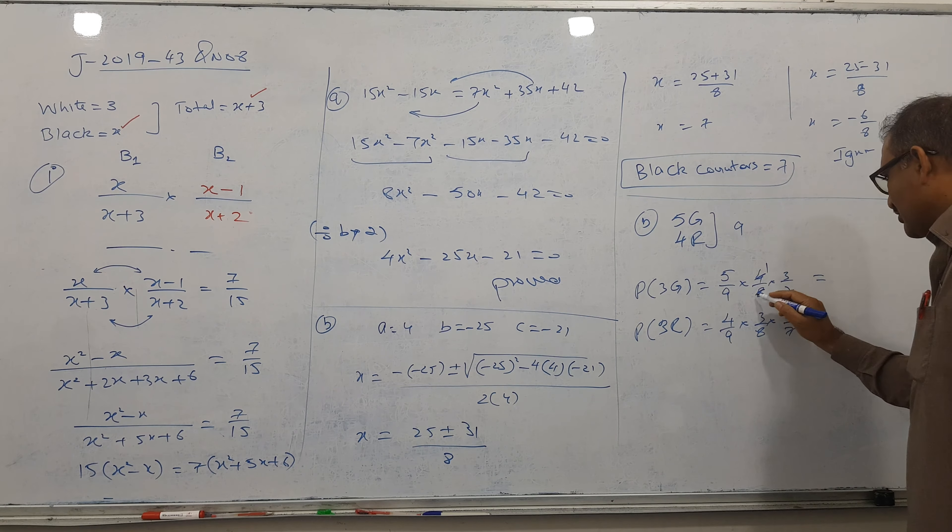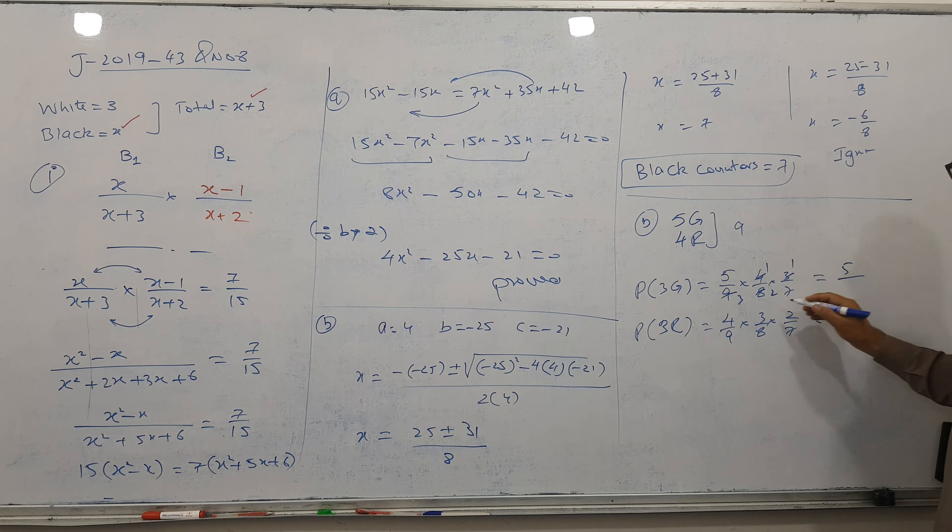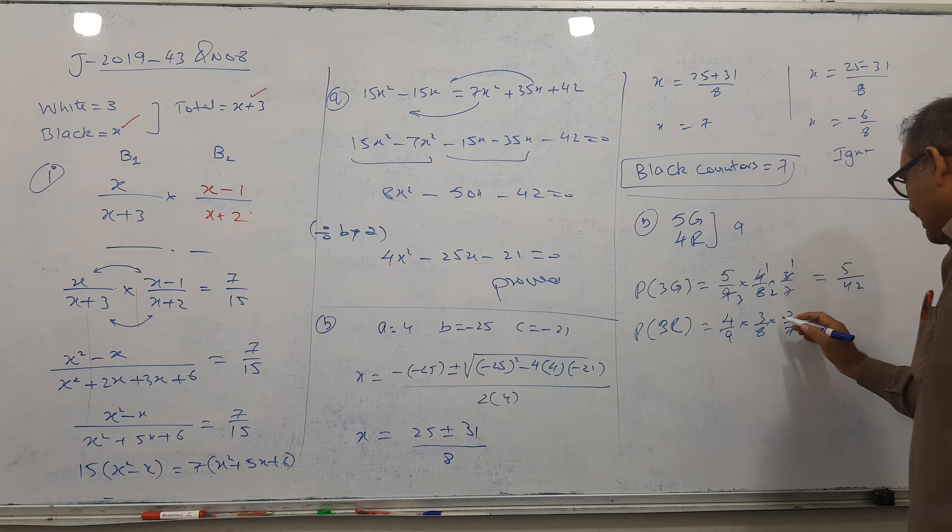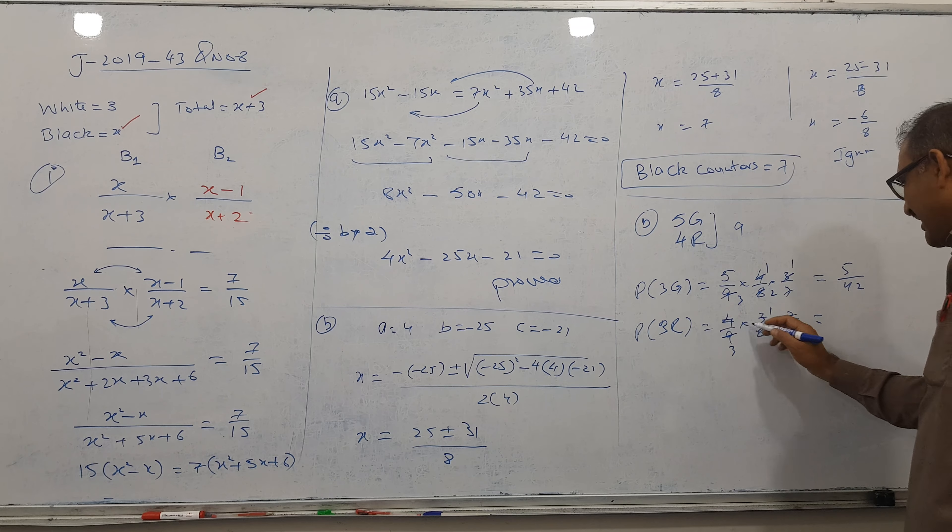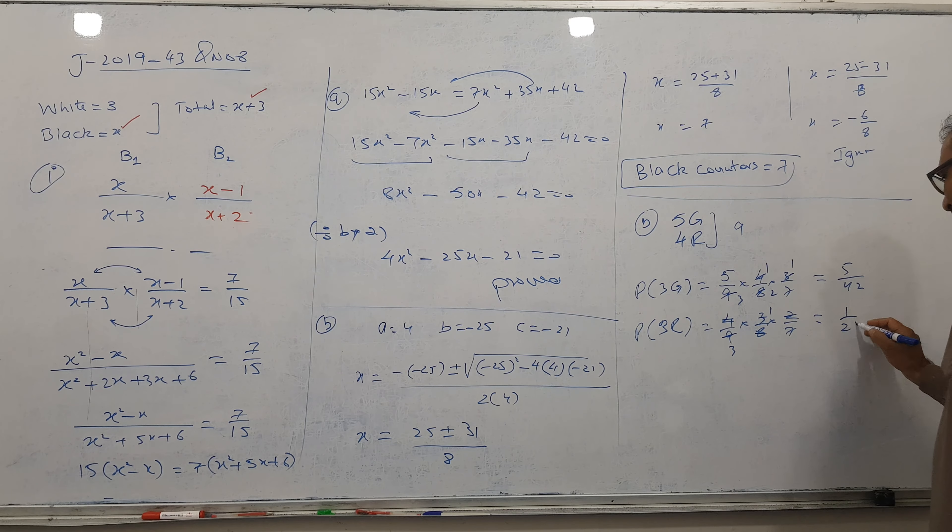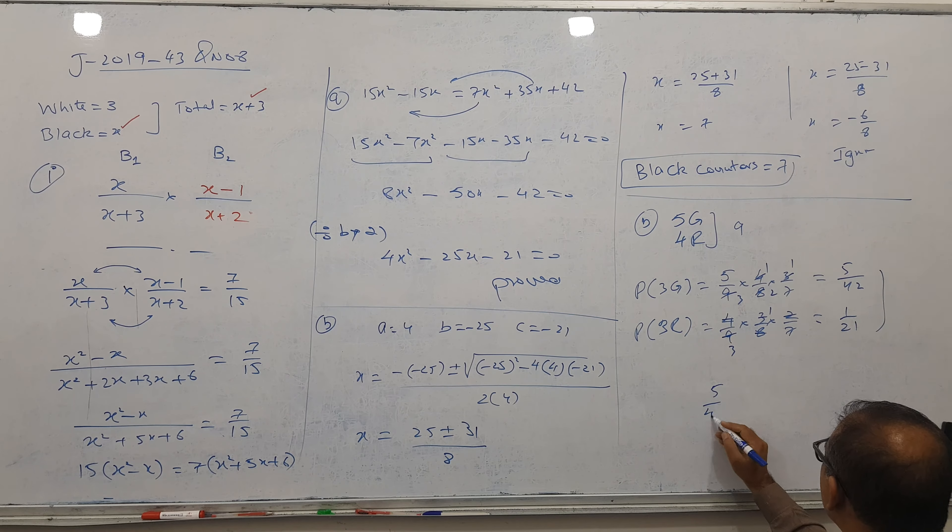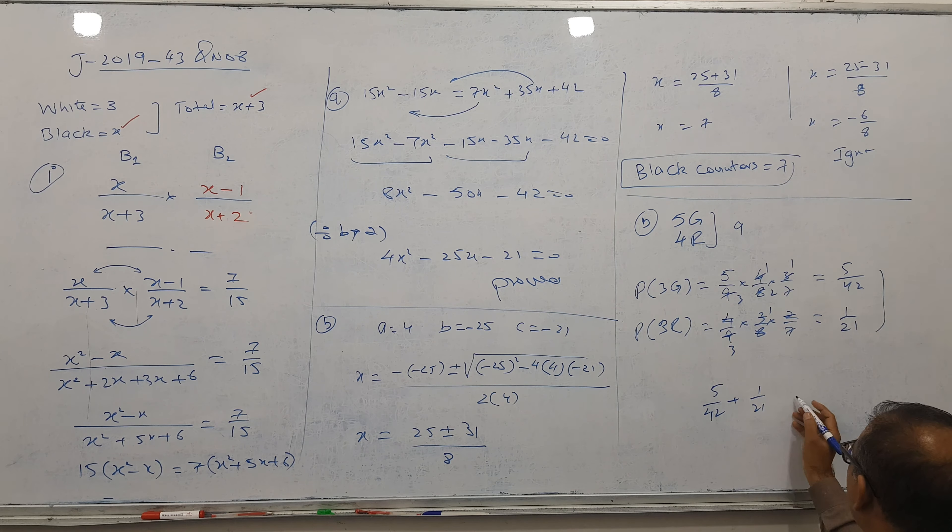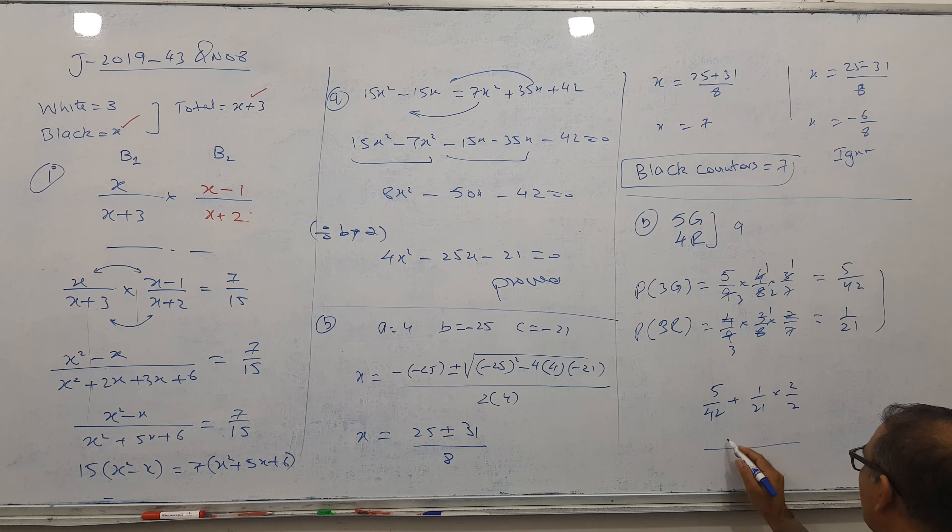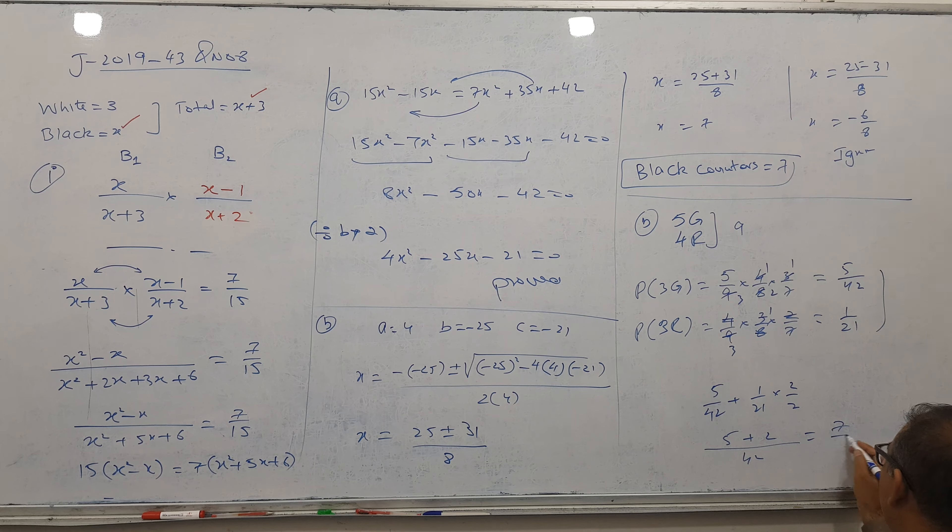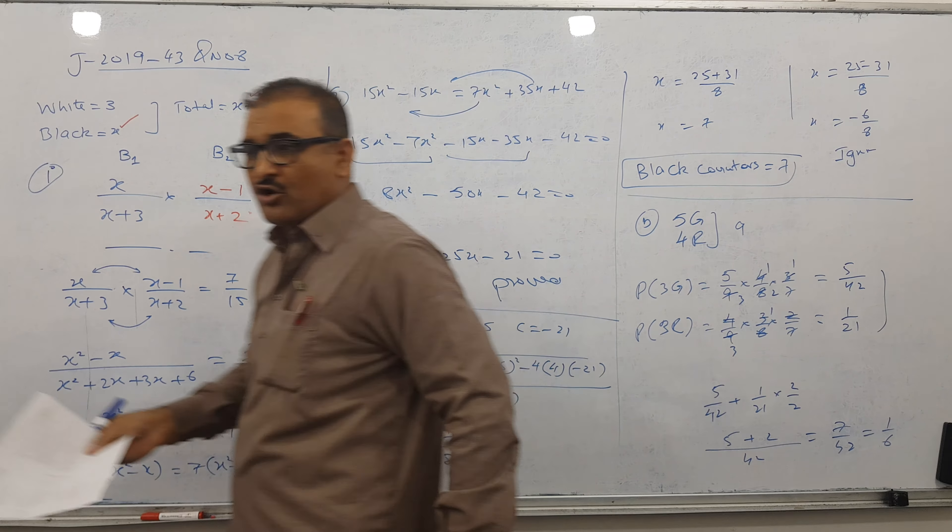The first answer: 5 times 4 times 3 over 9 times 8 times 7 equals 60 over 504, which simplifies to 5 over 42. The second answer: 4 times 3 times 2 over 9 times 8 times 7 equals 24 over 504, which simplifies to 1 over 21. Adding them: 5 by 42 plus 1 by 21. The LCM is 42, so 5 plus 2 equals 7 over 42, which gives 1 by 6. I think you got it clear.